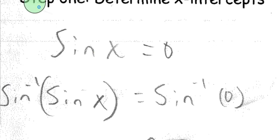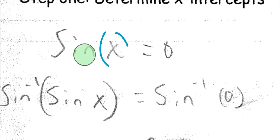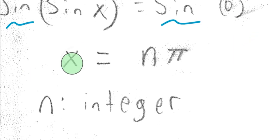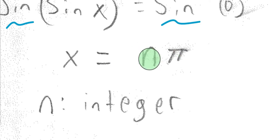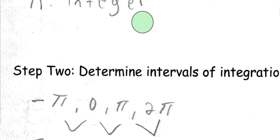As we saw in our first example, we want to figure out where the function crosses the x-axis so that we can break up our integral into several different pieces and take the absolute value of each. So we set sin(x) equal to zero. Taking the inverse sine of both sides, we ask where sine equals zero on the unit circle — that is anywhere along the x-axis, at any multiple of pi: 0, pi, 2 pi, and so on. Sine will equal zero at all of those.